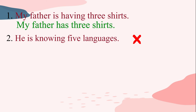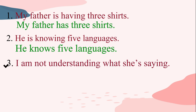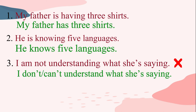Another sentence is 'he is knowing five languages' — this is incorrect. We don't have to use the present continuous tense here. What is required is simple present tense, because this is a statement that is true at the time of speaking and has nothing to do with continuity of the action. Another incorrect sentence is 'I am not understanding what she is saying.' The correct sentence would be 'I don't understand what she is saying' or 'I can't understand what she is saying.'